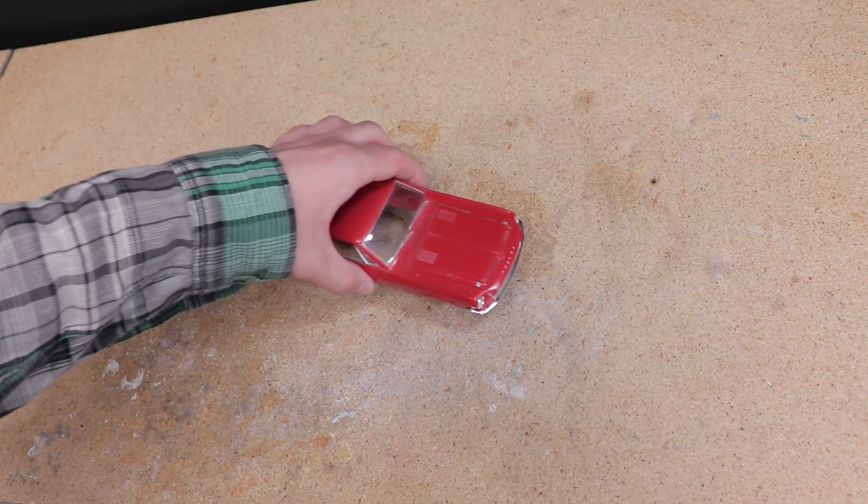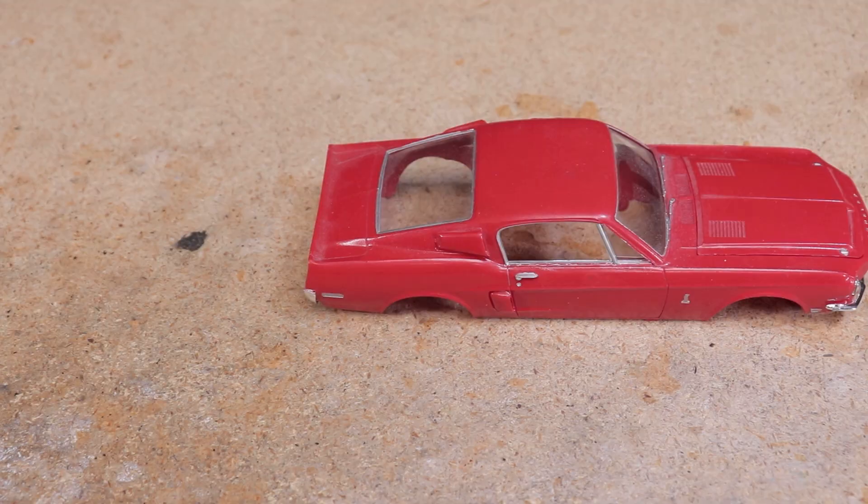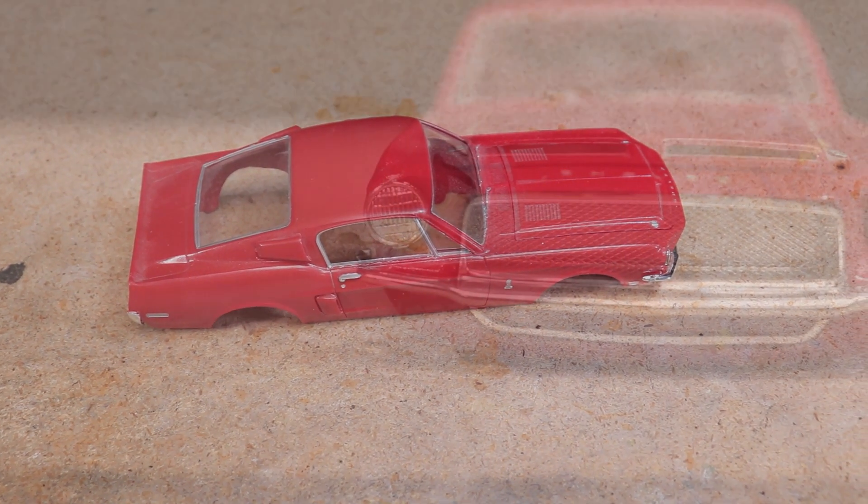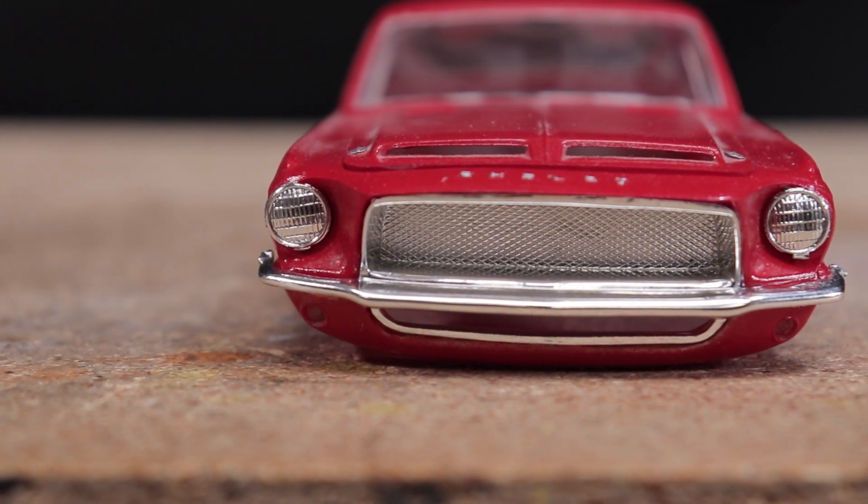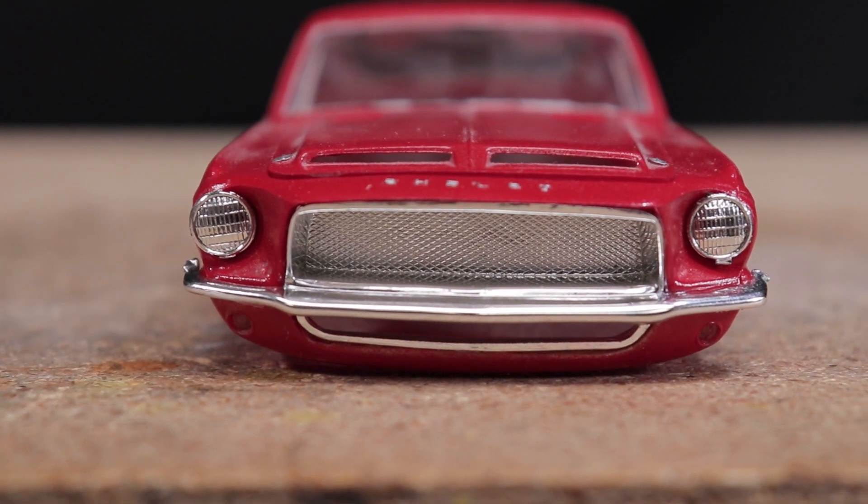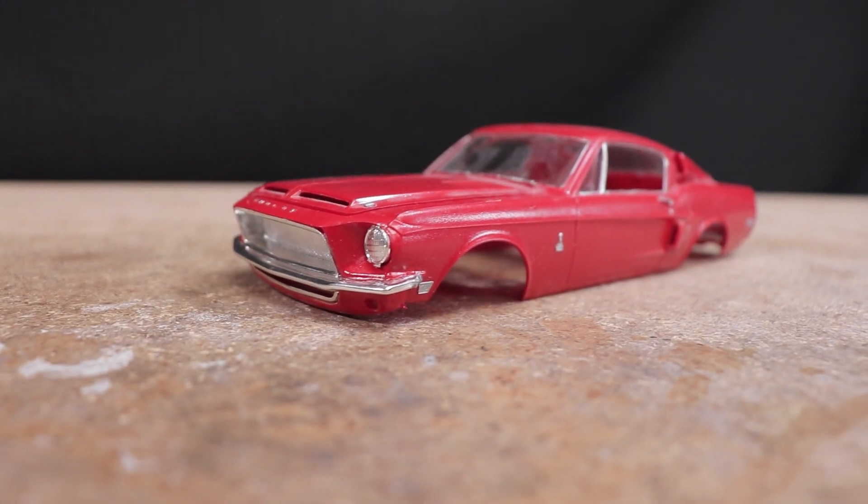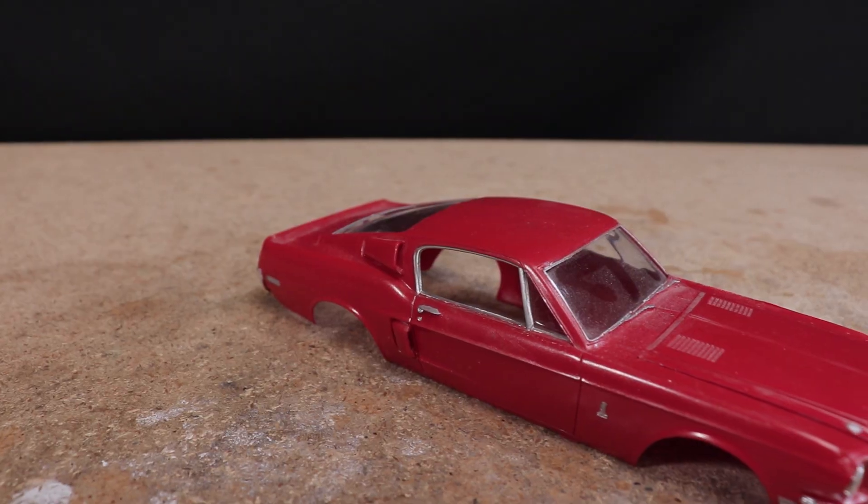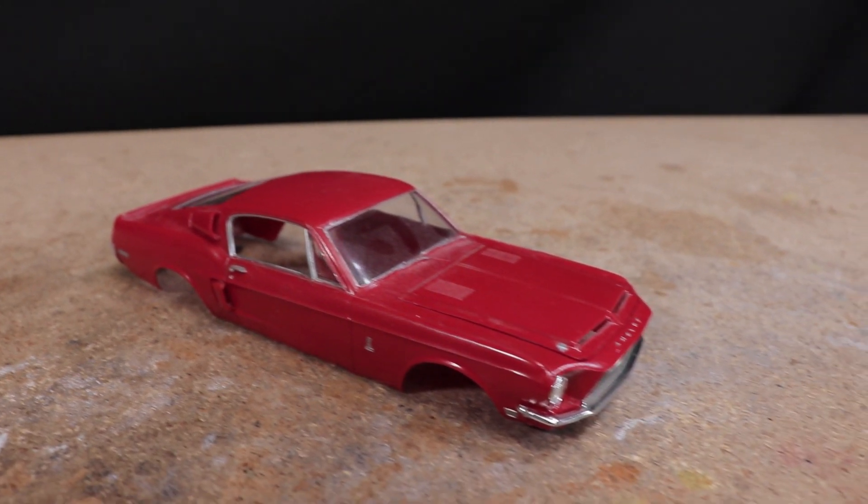First things first though, I need a car to build. Being a prototype I'm not really concerned with appearances and just want something kind of cool to slap on top of the chassis. After sifting through my hoard I decided I'd go with this barn find looking 1968 Shelby GT500. It's a little rough looking but I think it will be the perfect body for this build.